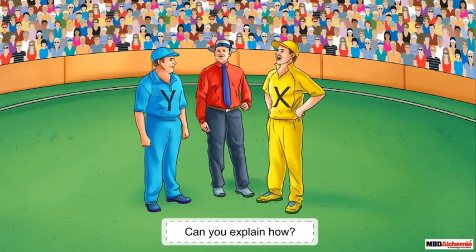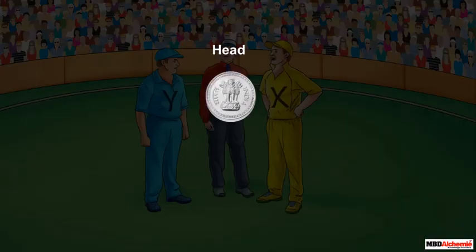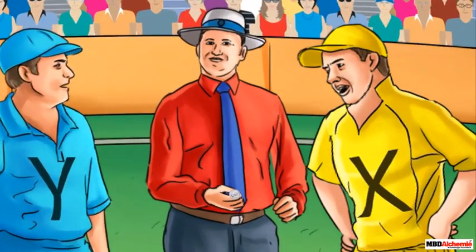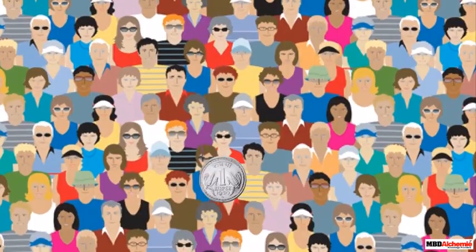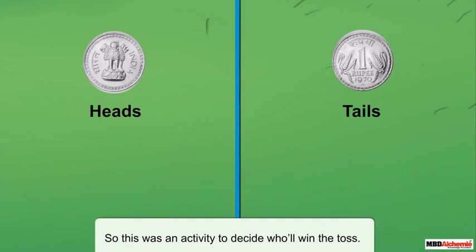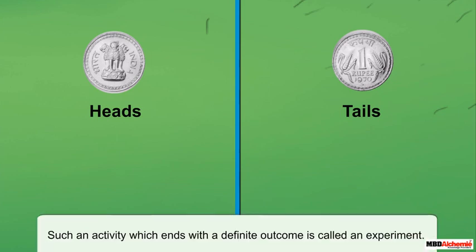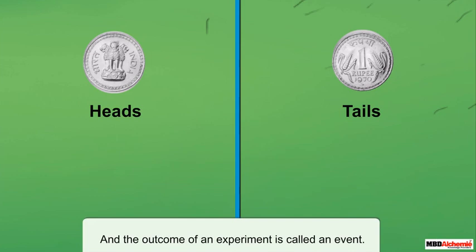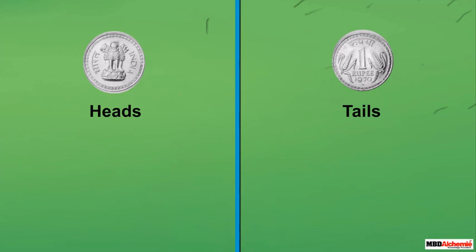Can you explain how? A coin has two sides — head and tail. So when we toss a coin there are only two possible outcomes: the coin either lands with the head side up or it lands with the tails side up. This was an activity to decide who will win the toss. Such an activity which ends with a definite outcome is called an experiment.